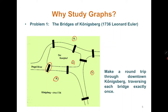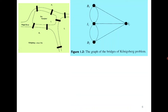You have to visit all bridges and return back to the same starting position — make a round trip through Königsberg. The constraint is that we are traversing each bridge exactly once: you cannot miss any and you cannot visit one twice. The question is: is it possible or not, and if yes, how?